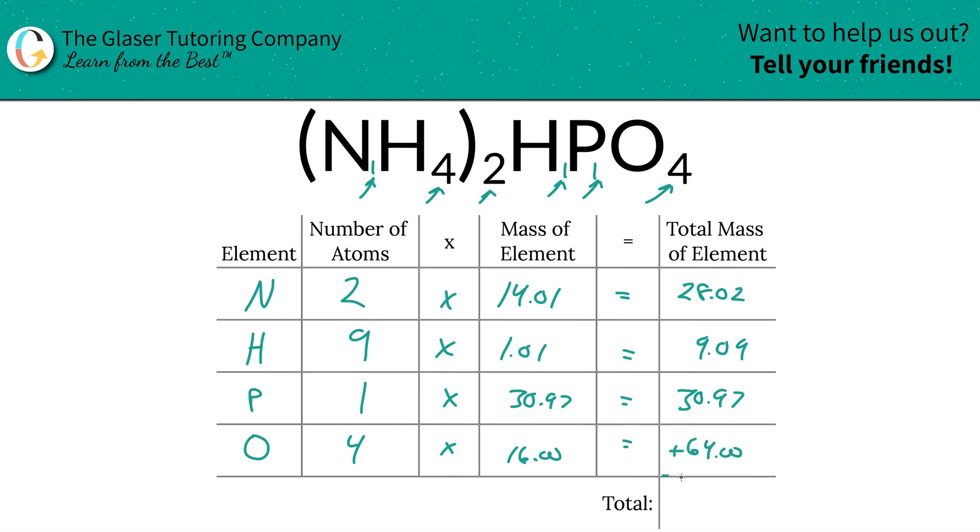Now, add this column up to find the total mass of the entire thing, the whole shebang. So this is going to be 132.08. And the units here are grams per mole, because we're finding molar mass.